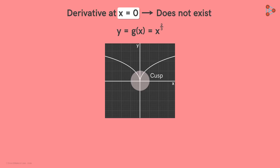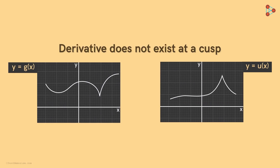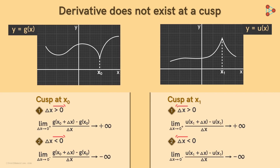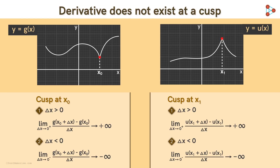In a graph of a function, this type of pattern is called a cusp. Here, x equal to zero does not hold any special significance — a cusp can occur at any point in the graph of the function. It is formed at the point on the graph when the average rate of change in these two cases approaches infinite slope of opposite signs. So if we find a cusp at any point on a function's graph, we can directly say that the derivative of the function does not exist at that point.